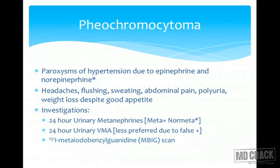Typical features are headaches, flushing, sweating, abdominal pain, polyuria, and weight loss in spite of good appetite. Investigations include 24-hour urinary metanephrines and 24-hour urinary VMA levels, though VMA levels are non-specific and are often disturbed by oral intake of certain foods like vanilla ice cream, leading to many false positives. For localization, MIBG scan — meta-iodobenzylguanidine scan — utilizing iodine-131 radioisotope is used to localize the tumor and assess for bilaterality.